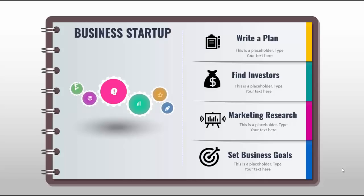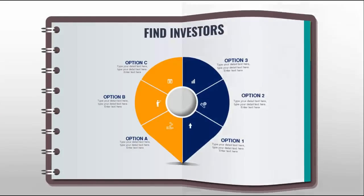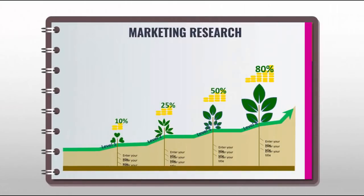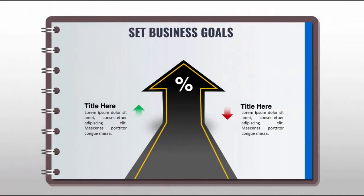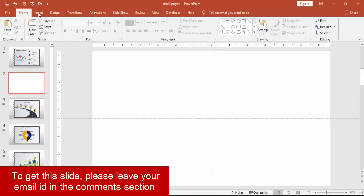Welcome to another exciting tutorial from PowerPoint University. In this tutorial I'm going to show you how to create this multi-purpose slide in PowerPoint, which you can use in your day-to-day presentations. There are four options which I have used as business startup points with some different colors. I have added some animations with a spiral binding effect, and when I click it will go to the next page. In the details you can type your plans: find investors, marketing research, and set business goals.